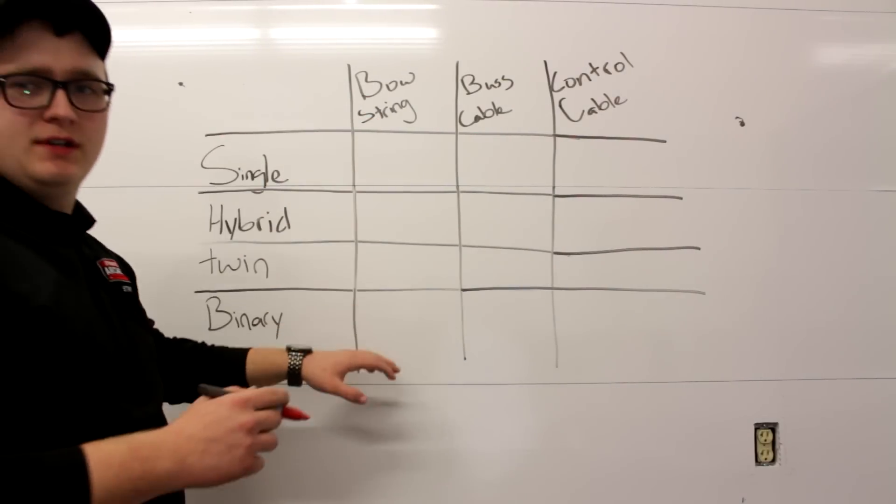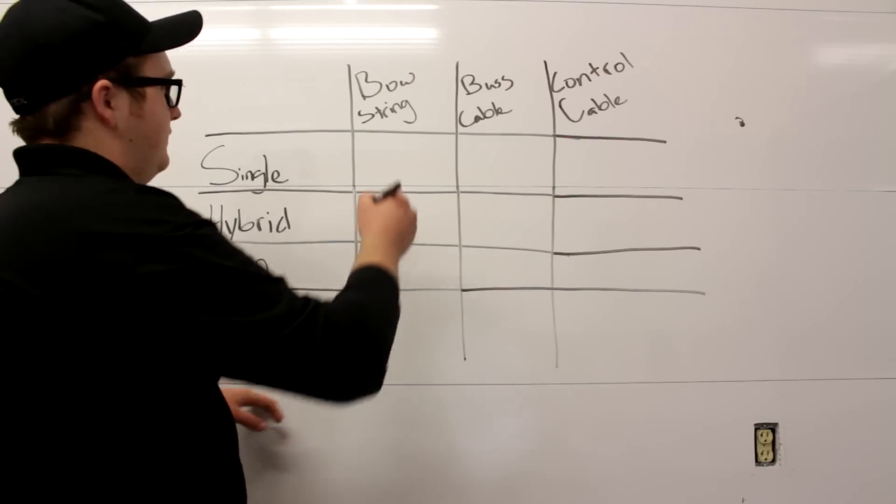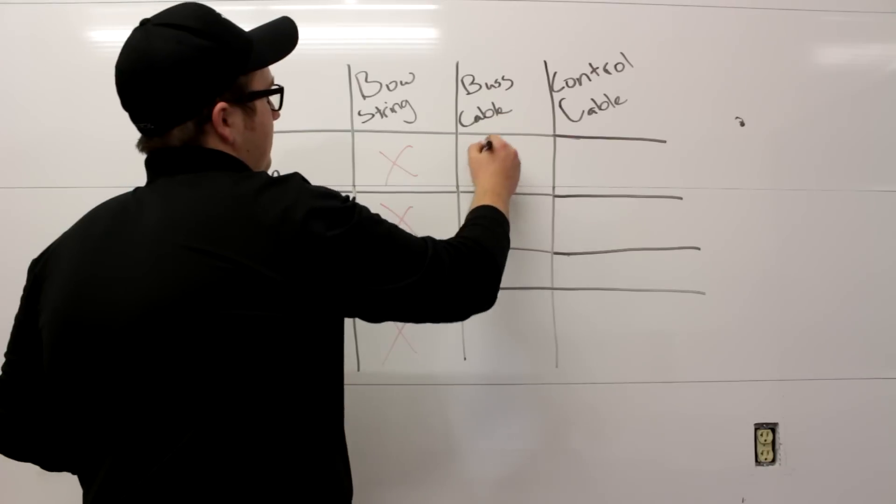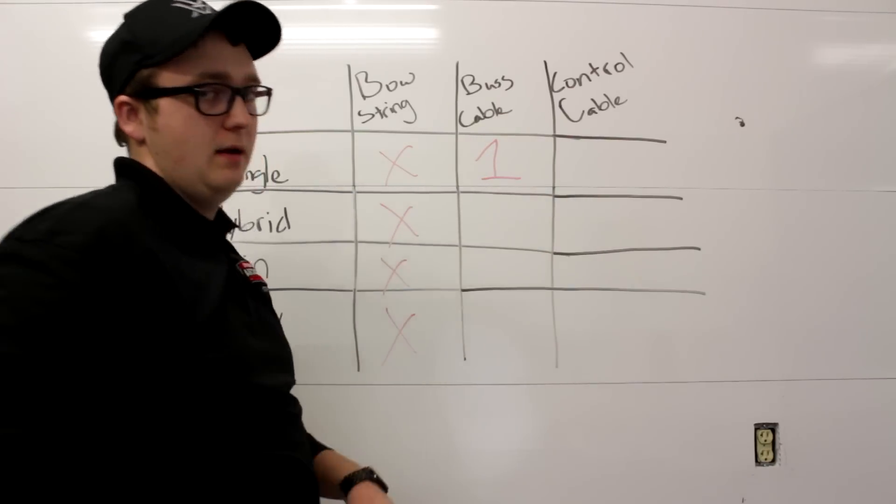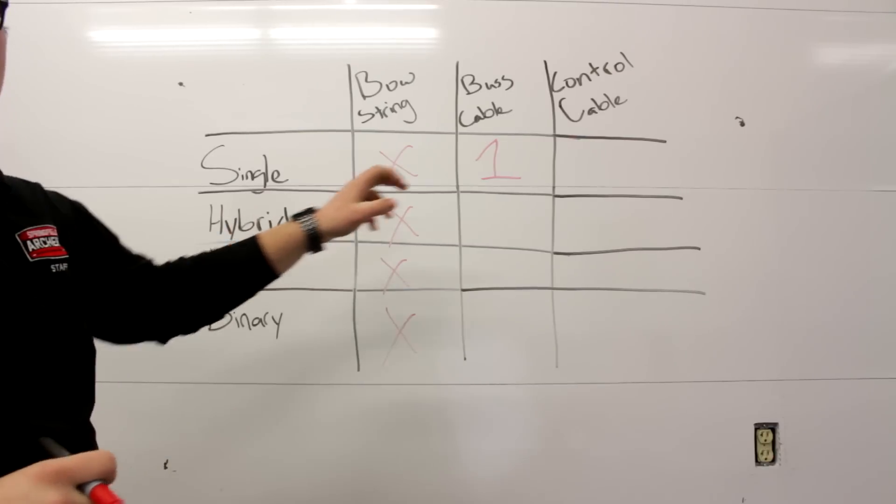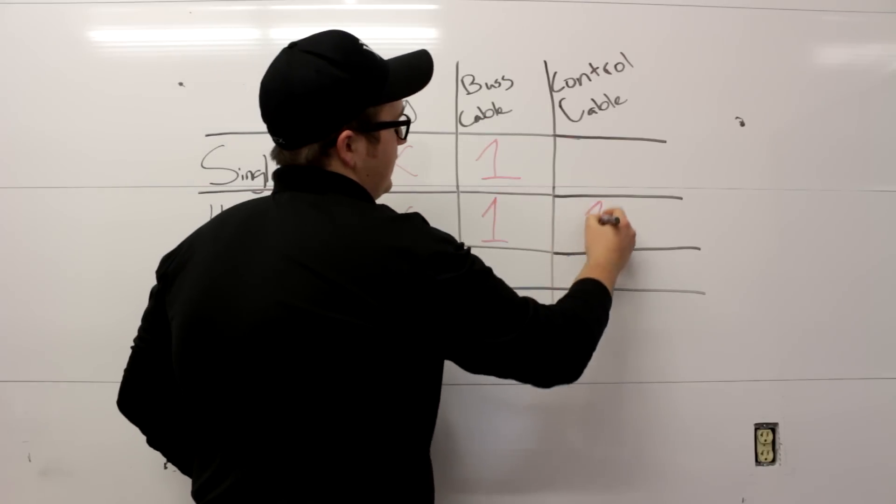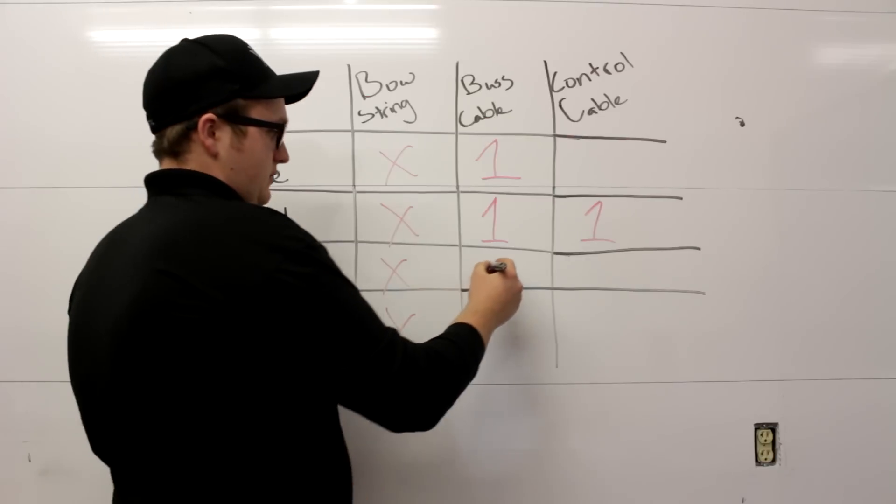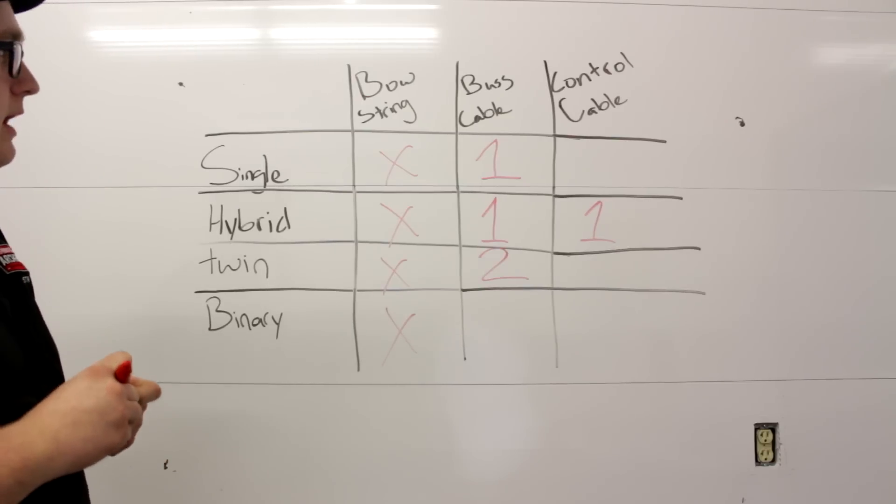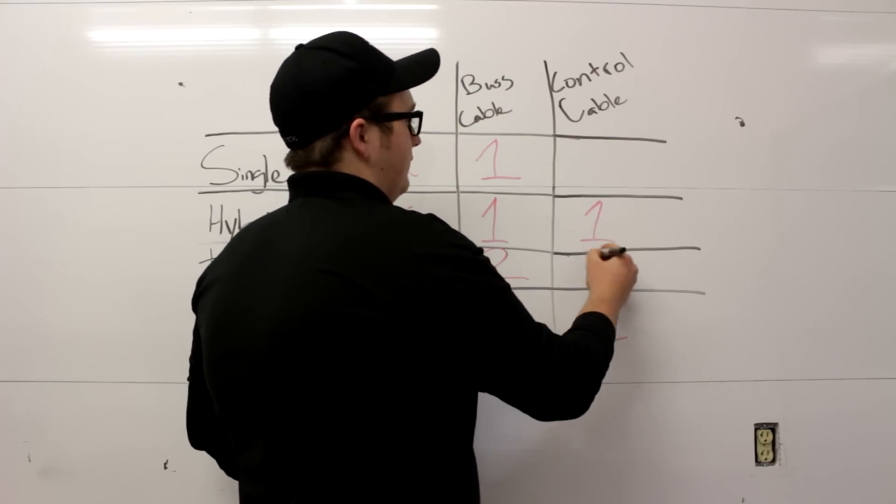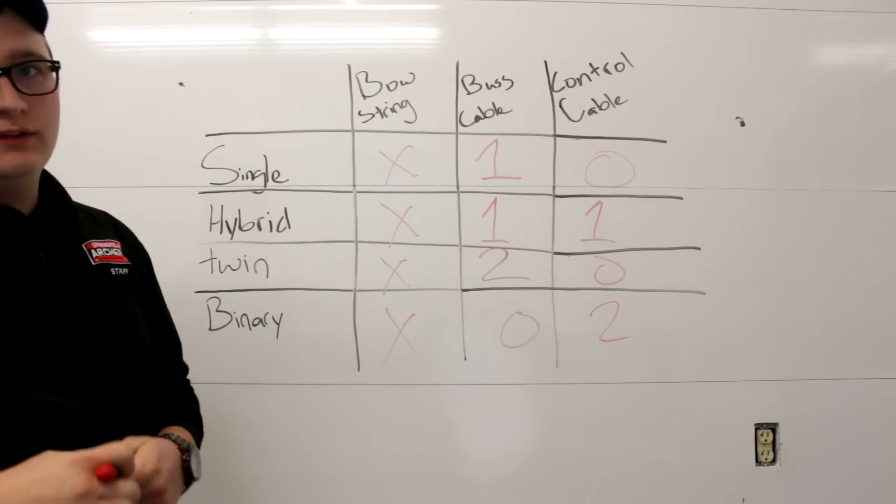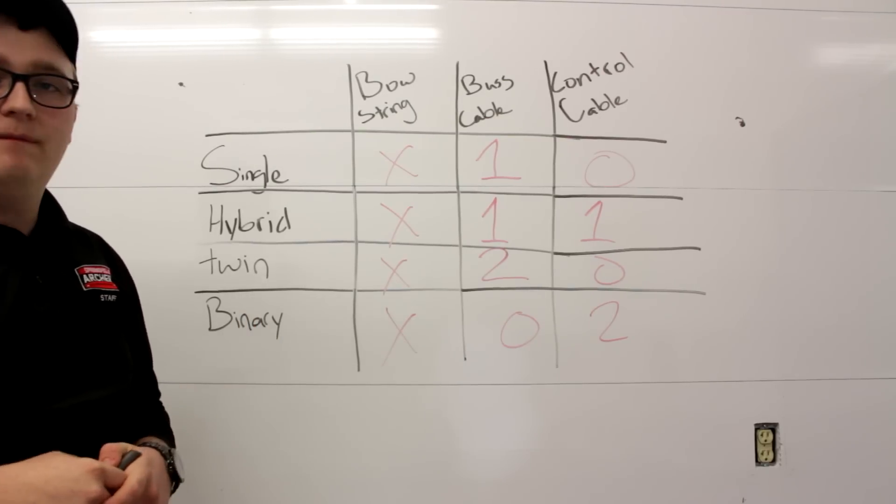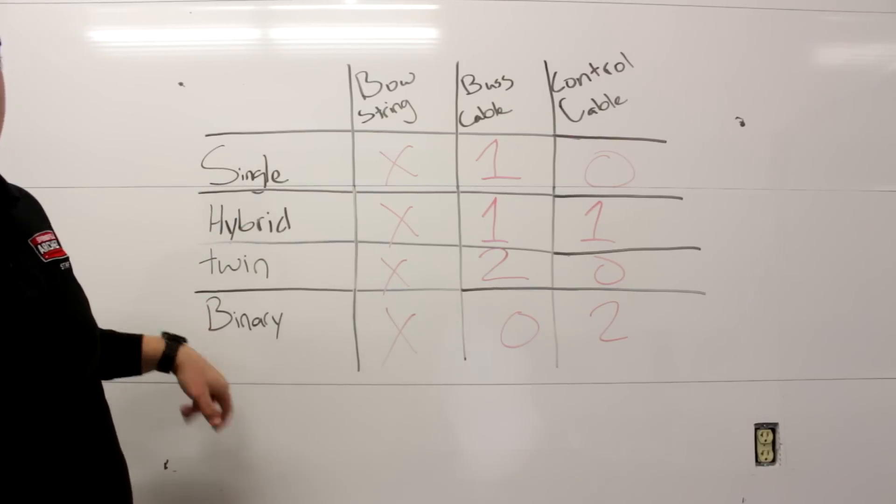So one recap. Obviously, all our bow cam systems had bow strings. So check all those off. The single cam had one bus cable and zero control cables. The hybrid cam system had one of each. It had one bus cable and one control cable. The twin cam had two bus cables and zero control cables. And the binary cam system had two control cables and zero bus cables. So now that should clear up a lot of the misconceptions, a lot of the miscommunications. Everybody should now know what a single cam, hybrid cam, twin cam, and binary cam system are.